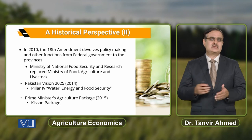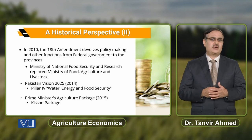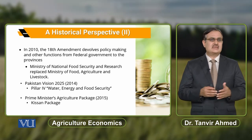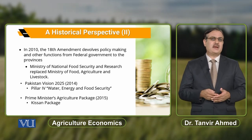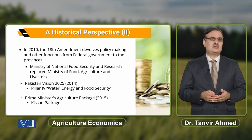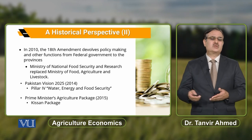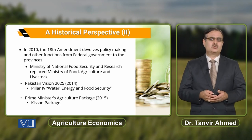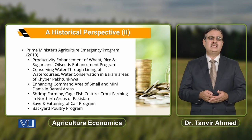The Prime Minister's Agriculture Package of 2015, also known as the Kisan Package, again had the objective to promote the agricultural sector and to promote the rural sector of Pakistan.